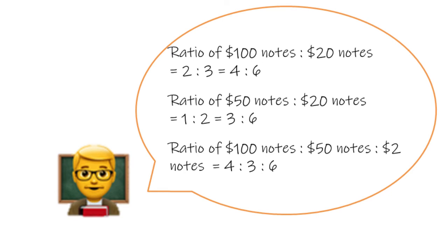The ratio of $100 notes to $20 notes is 2 to 3, which equals to 4 to 6. The ratio of $50 notes to $20 notes is 1 to 2, which equals to 3 to 6. The ratio of $100 notes to $50 notes to $20 notes is therefore equals to 4 to 3 to 6.